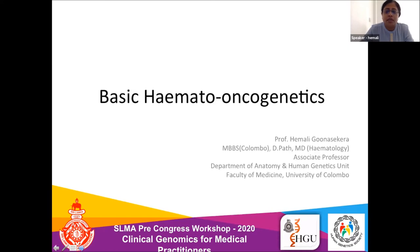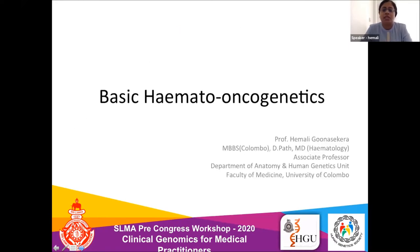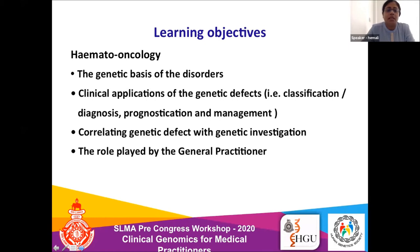The learning objectives of this lecture are to cover the basics of hemato-oncogenetics — a very vast subject that can't be grasped in 20 minutes, but we want to give you the basics. At the end, I hope you will understand the genetic basis of these disorders, clinical applications of genetic defects, the role of genes in classification, diagnosis, prognostication, and management, and the role you play as a general practitioner.